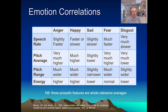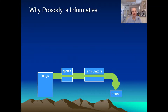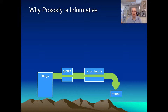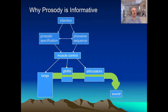Why do such correlations exist? Some of them we can understand by considering the mechanisms of speech production. Here we see the airflow in green, lungs passing through the glottis, vocal folds vibrate, tongue and lips do their thing, apply resonances, we get the sound. It's important that the physical dimensions of the vocal tract are modulated by musculature, which is controlled by neural signals, which are in turn controlled by higher centers of the brain.